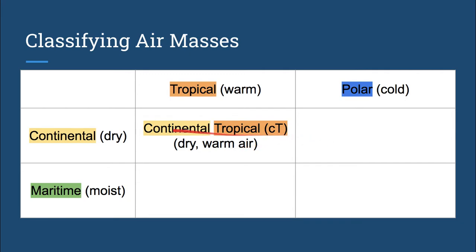Moving across, I'm going to keep continental, but I'm going to add polar. Some air can be continental polar, represented with lowercase c, uppercase P. This air will be dry for continental and cold for polar.